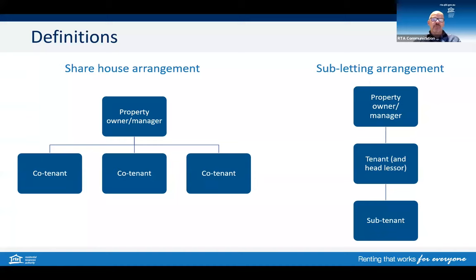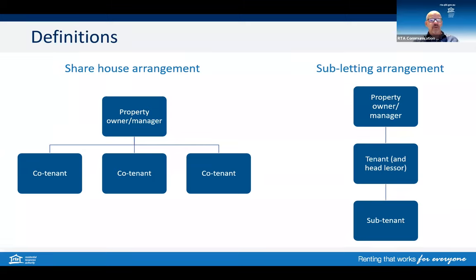So what are we talking about when we mention share houses and subtenancies? Looking at the graphic on the left, this shows a share house or co-tenancy situation, where tenants have a direct relationship with the property manager or owner. Whereas on the right, we see a direct relationship between the property manager or owner and a tenant, but then a second relationship between the tenant and their subtenant. In this situation, the subtenant has no relationship with the property manager or owner outside of knowing that they have been approved to be there.